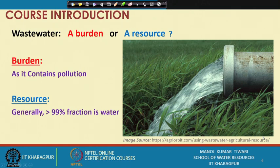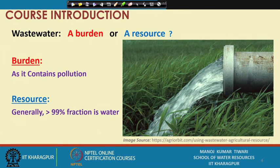If we look at wastewater, the majority of its content is actually water. So a big question often arises: should wastewater be considered as a burden or as a resource? It is a burden in many senses because it contains pollution and cannot be used directly for most practical purposes. Nobody would like to take water from the drain and put it in their shower or use it in the kitchen. It can be used for agriculture or horticulture in a few places, but there is a risk associated with using it directly for agriculture.